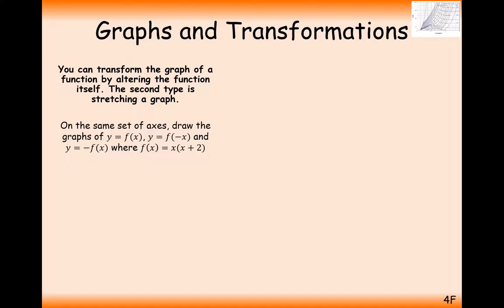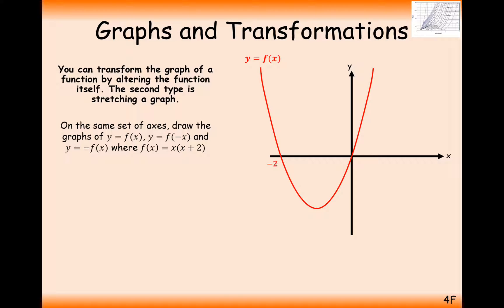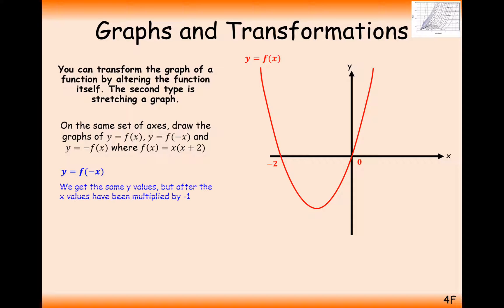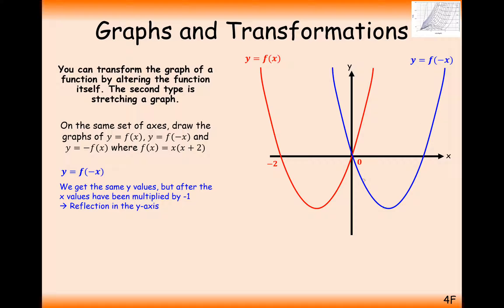Now let's look at reflecting in the opposite way. f of x is x plus 2, so intersections at minus 2 and 0. The first transformation is f of minus x. Since minus f of x went over the x-axis, it makes sense that f of minus x goes over the y-axis. And remember, it's inside the brackets — inside the brackets is always horizontal movement. All of the negative x-coordinates are now going to be made positive, so we're going to reflect in the y-axis.